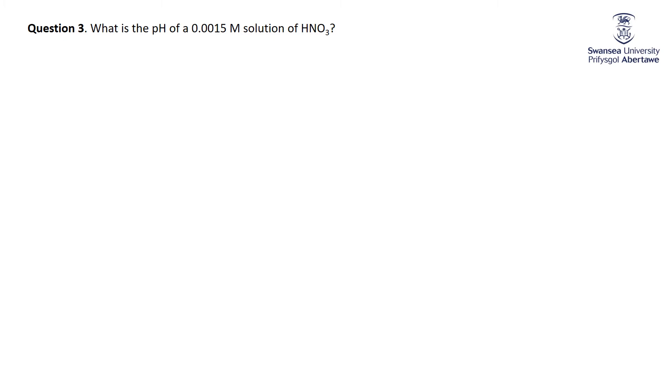pH 0.0015 molar solution HNO3. You need to recognize HNO3 as a strong acid. Completely dissociates, so the concentration of H-plus is 0.0015. pH is minus the log of H-plus. So therefore minus the log 0.0015 or 2.82.